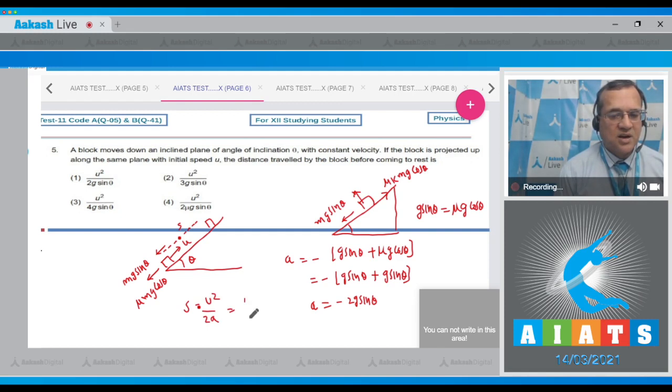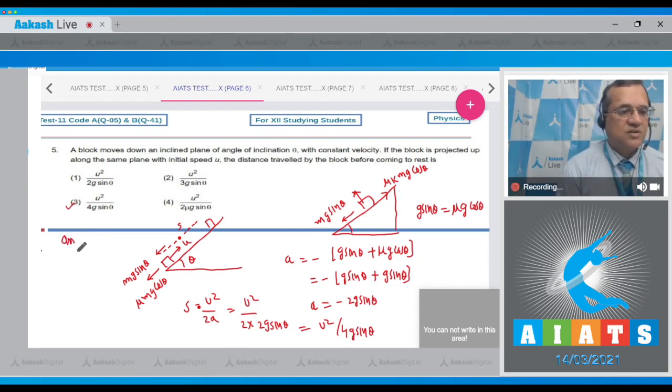And a is this one, that is equal to u^2 over 2*g*sin(theta), which equals u^2 by 4*g*sin(theta). Looking at the option, u^2 by 4*g*sin(theta) is the third answer. Therefore the answer to this question is 3.